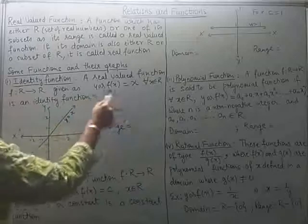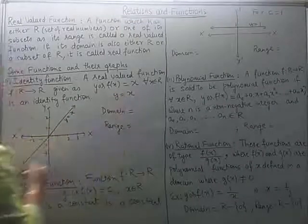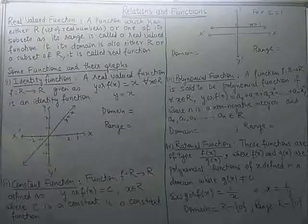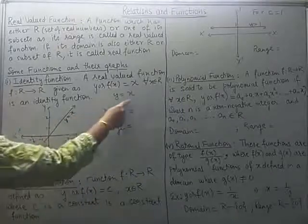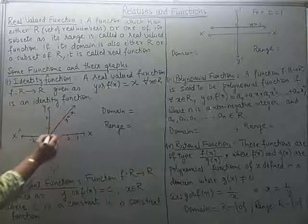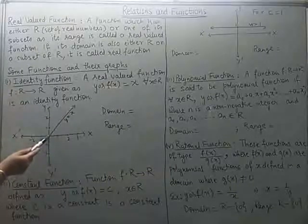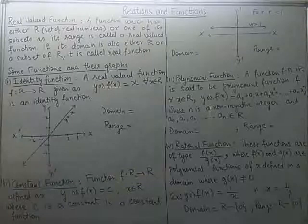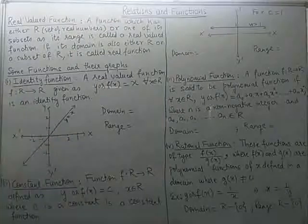Looking at the equation Y equals X and trying to plot it — you have done plotting of polynomials in class 10th — you can assign real values to X and corresponding to that get the values for Y. Whatever value X assumes, Y assumes the same value. If X is 0, Y is 0. If X is 1, Y is 1. If X is minus 1, Y is minus 1. On plotting it, it will be a line inclined at an angle of 45 degrees with the X-axis in the first quadrant. You can see the identity of the element is not changing; whatever is the element taken from the domain, it has the same image in the co-domain.